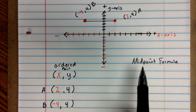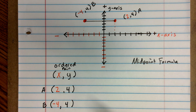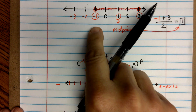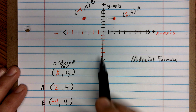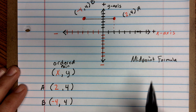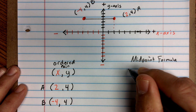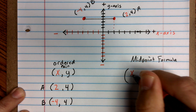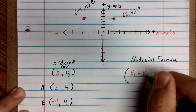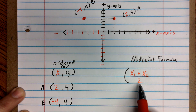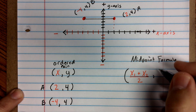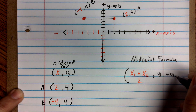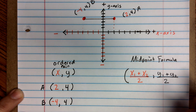Write this on your paper — it will help you answer these questions. On the number line we only had one value moving horizontally, but on the coordinate plane we also have a vertical y-value. So the midpoint formula has two parts: the x-component is (x₁ + x₂) ÷ 2, and the y-component is (y₁ + y₂) ÷ 2. Together they give you the ordered pair for the midpoint.